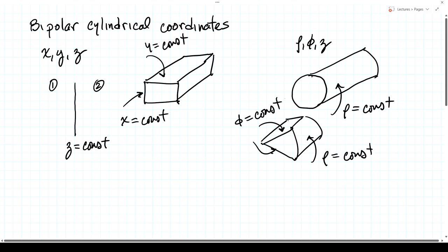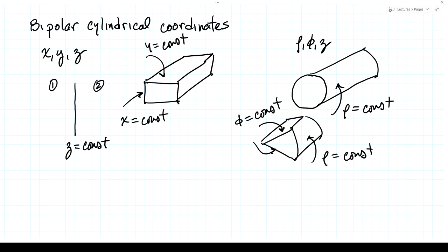Generally, for a problem to be tractable analytically, we need a coordinate system in which the surface at which we impose boundary conditions is described by one coordinate being equal to a constant. Additionally, the coordinate system needs to be such that we can actually set up and solve the Helmholtz equation in that coordinate system.